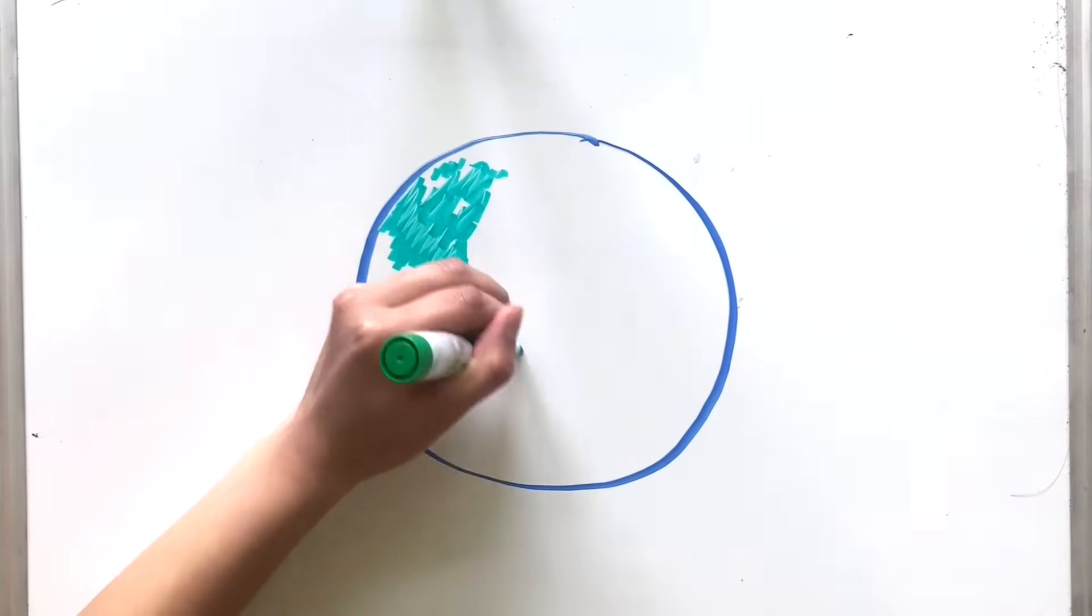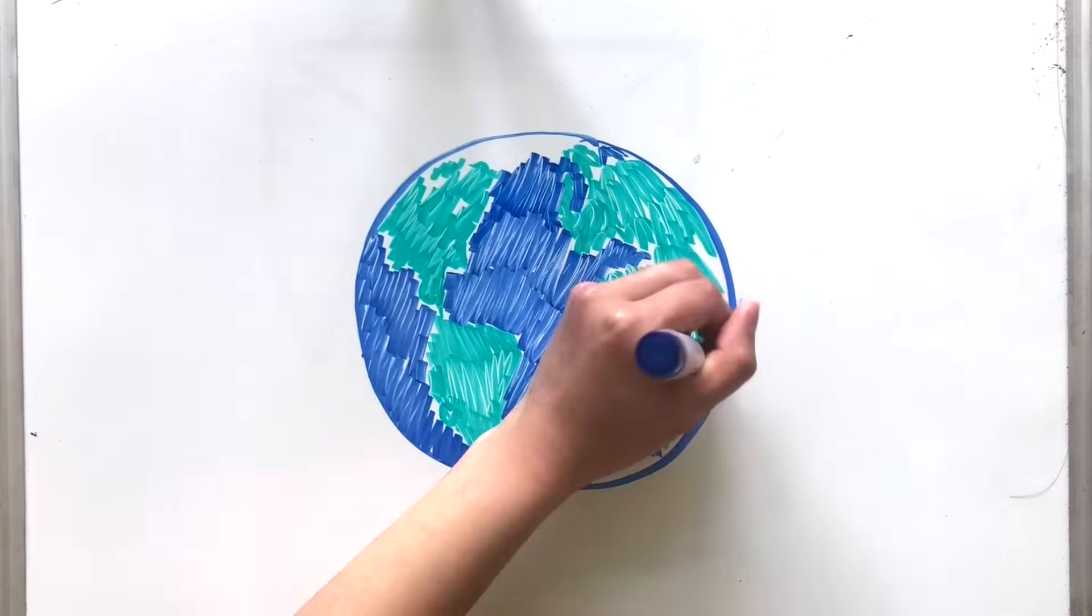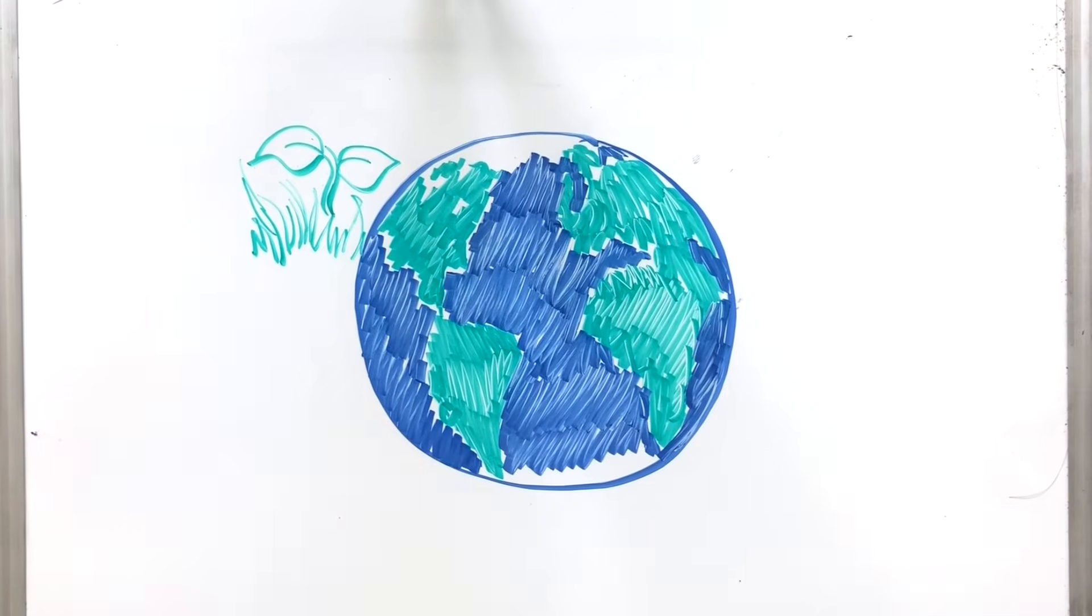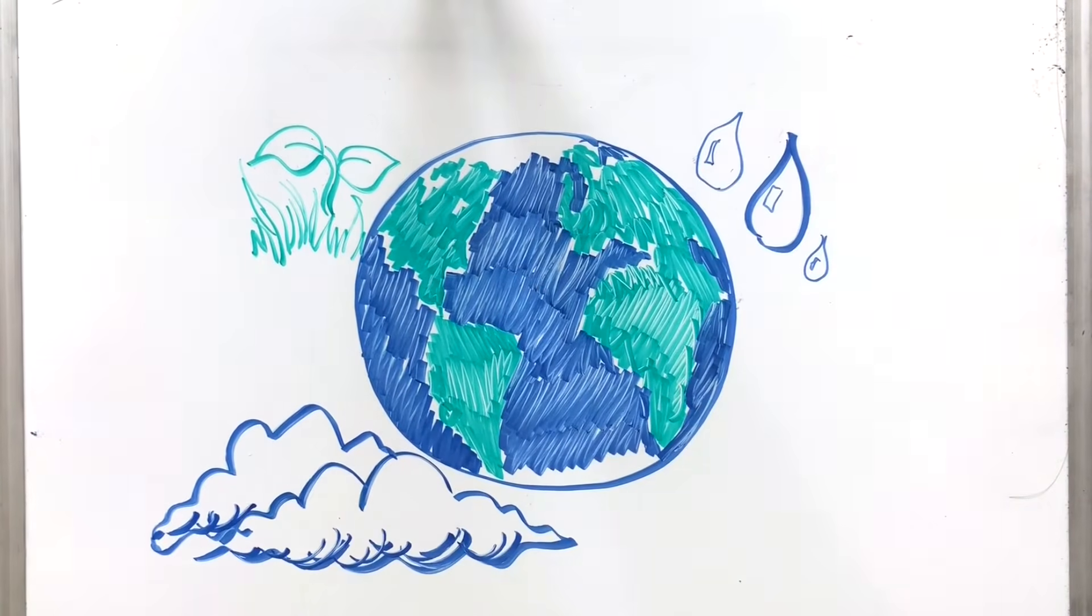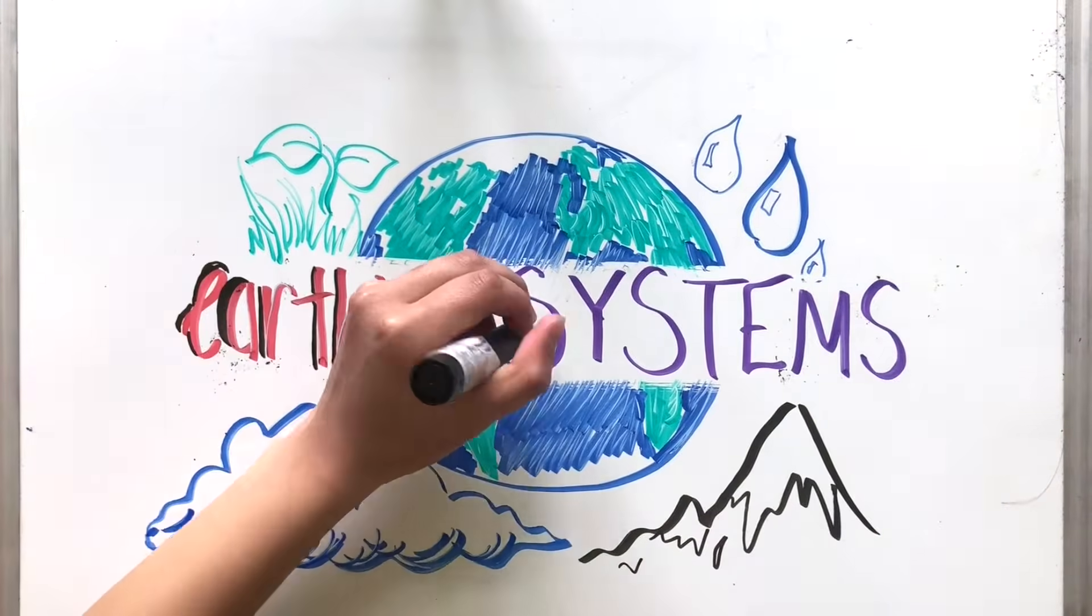Last week, we looked at water, how it plays a major role in sustaining life on our planet. This time, we'll be looking at how it interacts with other systems on Earth and works with these systems to influence our land and weather.